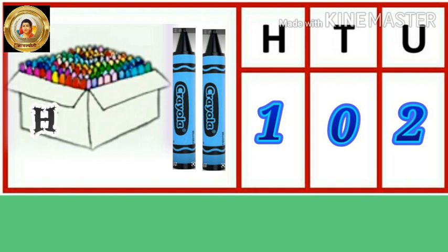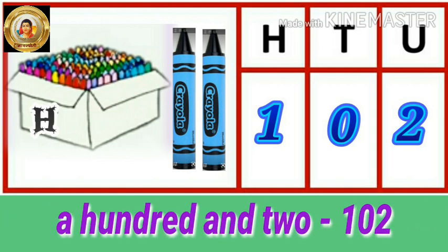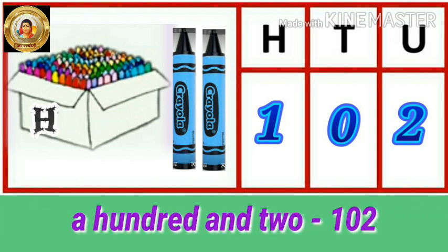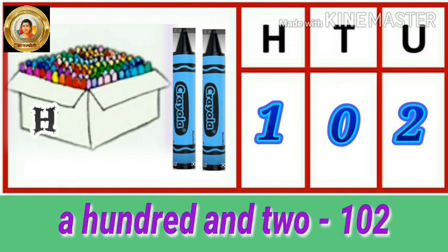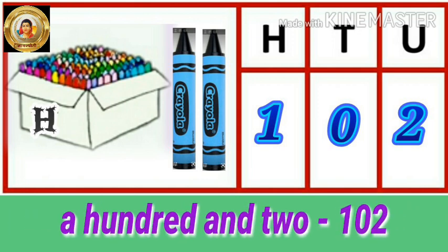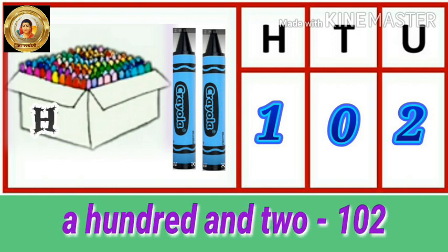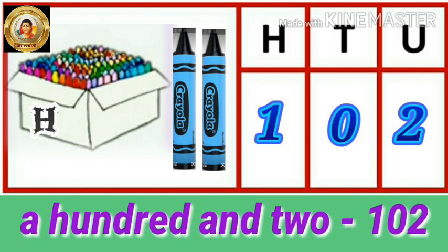In this picture, there is a box of hundred. And how many single crayons? Yes, two crayons. So we write two in the unit place, zero in the tens place, and one in the hundred place. It forms the number a hundred and two — that is one zero two.